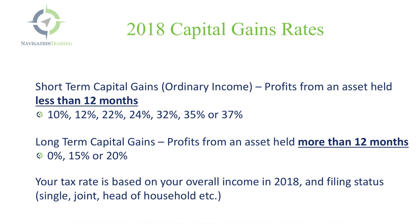The tax brackets vary based on your overall income and filing status — single, joint, head of household — positioning you in one of those short-term tax rates. Long-term capital gains apply to profits from assets held more than 12 months. If you have stocks held longer than 12 months and sold them in 2018, those fall under long-term rates, which are typically lower: 0%, 15%, or 20% depending on your filing status and income. Keep in mind that if you're still holding a stock, those gains are unrealized — you don't pay tax until you cash out. These rates only apply to realized gains.